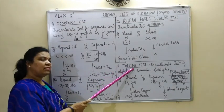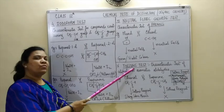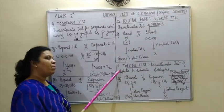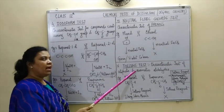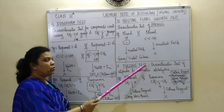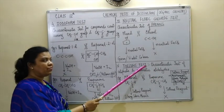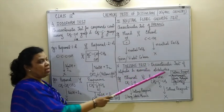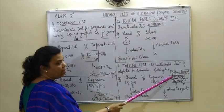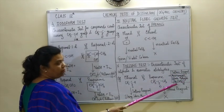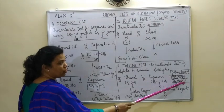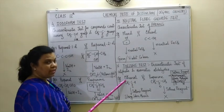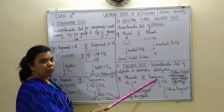Let us now move on to the next test, and the name is Tollen's test, also called the silver mirror test. It is a characteristic test given by both aliphatic as well as aromatic aldehydes. The composition of Tollen's reagent is ammoniacal silver nitrate solution — [Ag(NH3)2]⁺ — this is Tollen's reagent. Suppose you have to distinguish between a pair: ethanal versus propanone.